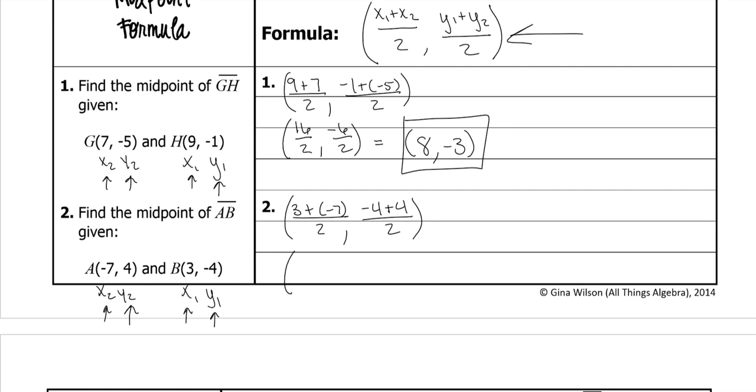3 plus a negative 7 is the same thing as 3 minus 7. Again, use a calculator if the negatives confuse you. So negative 4. By the way, for those of you who are in person, we do have calculators at the school so you don't have to worry about downloading them. Negative 4 plus 4 is 0 divided by 2.